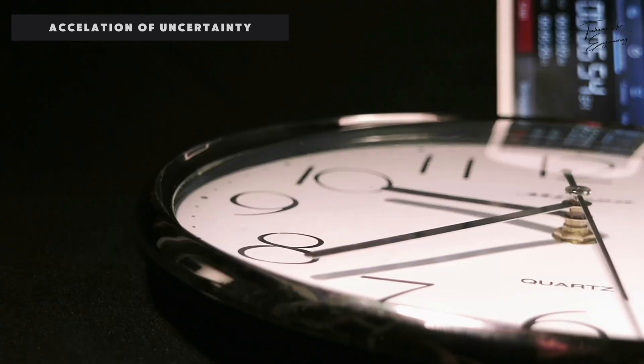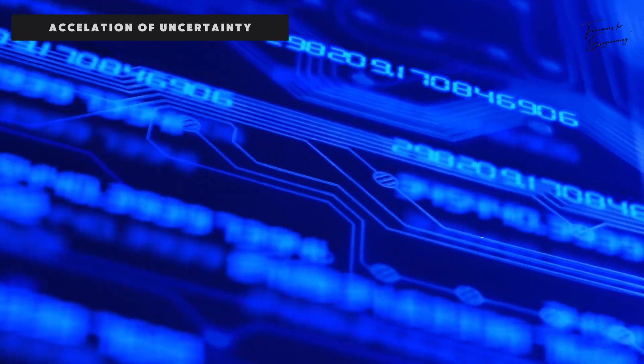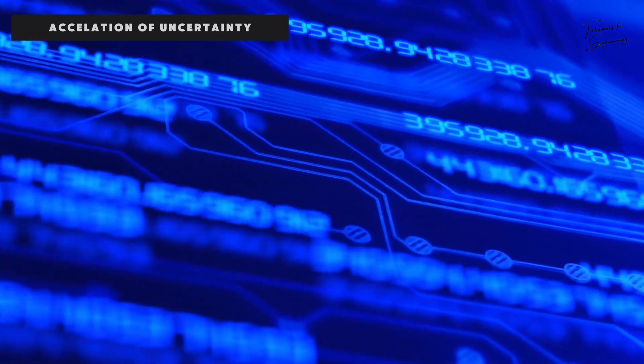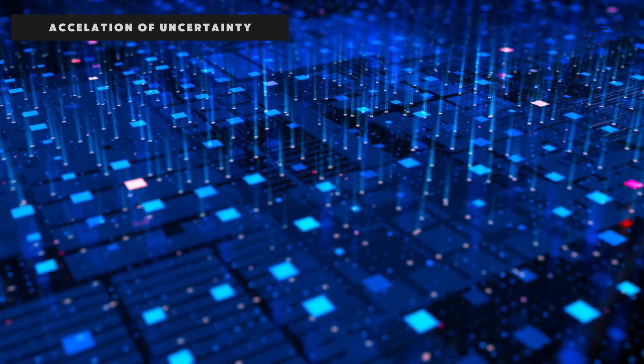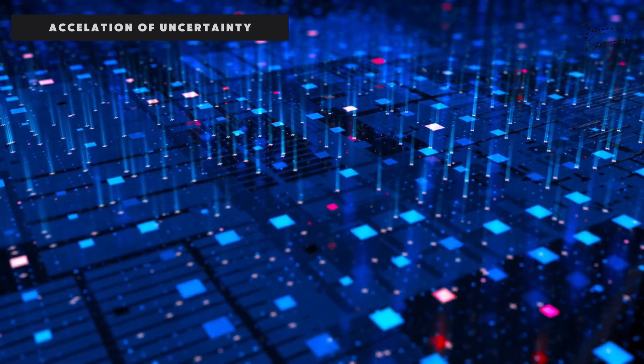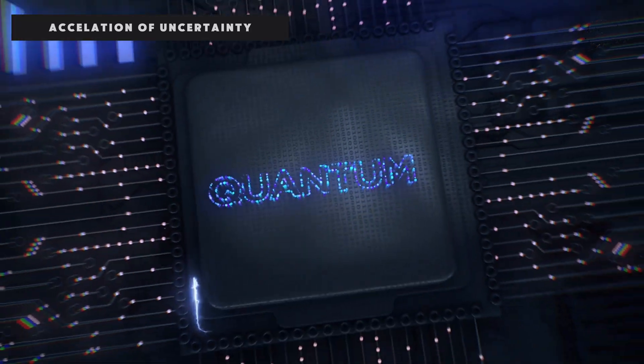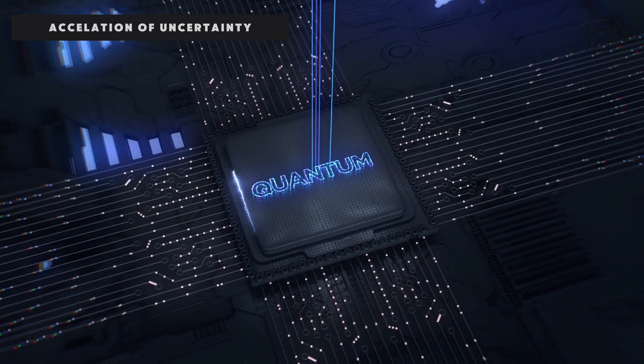The exact moment you look at your watch, the time it tells you will change. Sounds like a headache, right? There's also the problem of industrial automation. Robots and automated systems can become less accurate, leading to more errors in production. This can lead to lower productivity and difficulty controlling quality.